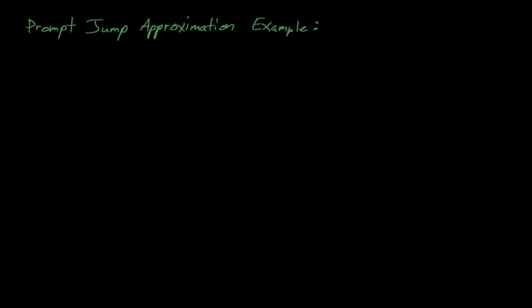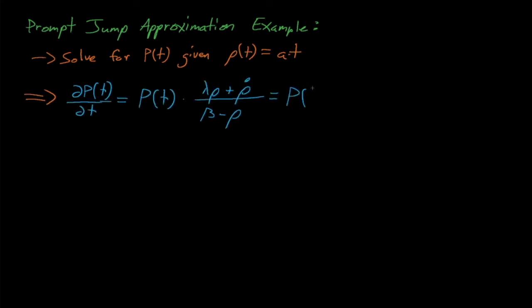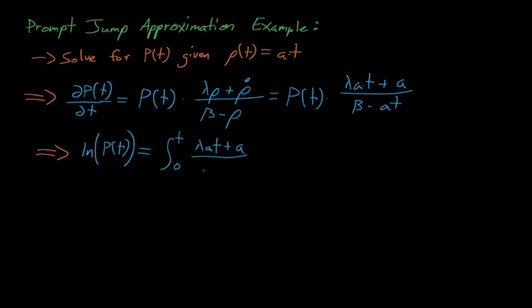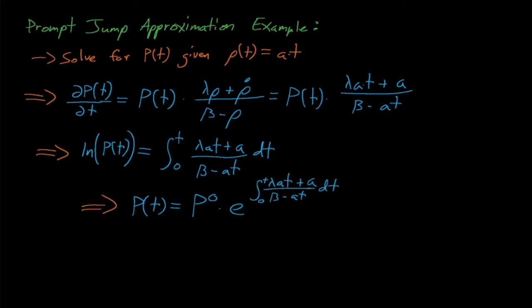Now let's review a quick sample application of the prompt jump approximation. Let's say that our reactor experiences a ramp reactivity insertion where rho is equal to some constant A times time. We can substitute A*t and its derivative, which is just A, into our differential power equation from the prompt jump approximation, which, after a bit of math, gives us that the power is equal to the adjusted initial power times e to the integral of lambda*A*t plus A, all divided by beta minus A*t. Note here that our adjusted power is still equal to beta divided by beta minus rho, but rho is no longer a constant — it's A*t.